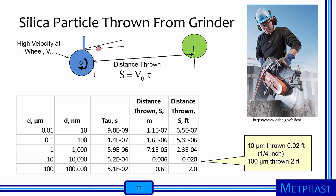We can use these relationships to compute how far a silica particle will be thrown from a grinder. Going back to the same table with particle diameter in micrometers and nanometers in the first two columns, the middle column shows particle relaxation time tau in seconds, and the last two columns show the stopping distance in meters and feet. Small particles relax very fast. It's only with the largest particles that we get appreciable movement. A 10 micrometer particle is thrown only 0.02 feet, about a quarter of an inch. In contrast, a 100 micrometer particle would be thrown much farther, about two feet. The eye protection required for workers is to prevent ocular damage from impact of very large particles.